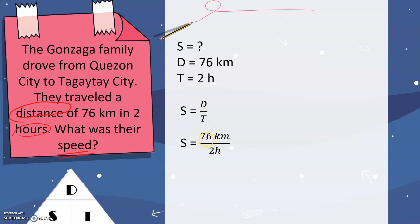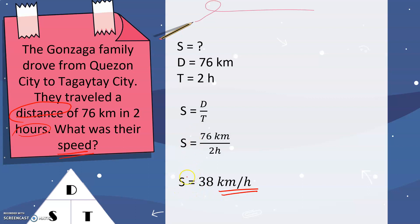That means we will be dividing distance and time, giving us 76 kilometers over 2 hours. Dividing 76 by 2 gives us 38. Since kilometers and hours are different units of measurement, we cannot cancel them out. Therefore, our unit is kilometers per hour. The Gonzaga family drove at 38 kilometers per hour.